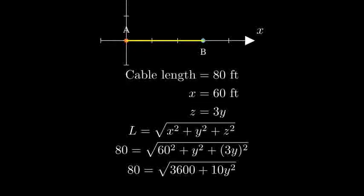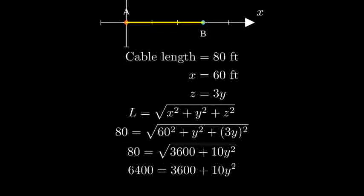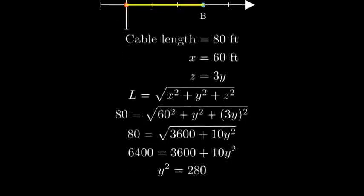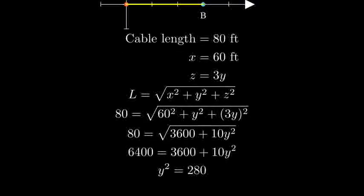Simplifying inside the square root, we get 80 equals the square root of 3600 plus 10Y squared. Now let's solve for Y. Square both sides to get rid of the square root. After subtracting 3600 from both sides and dividing by 10, we get Y squared equals 280.